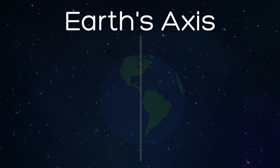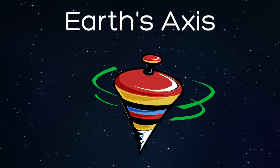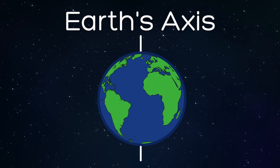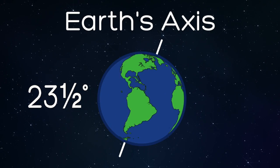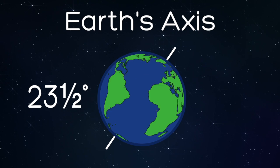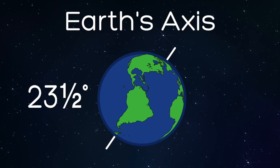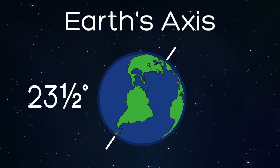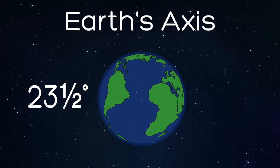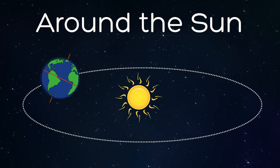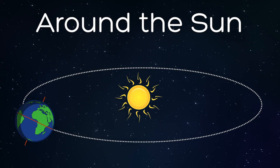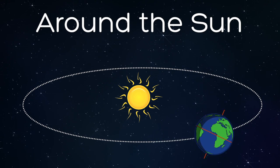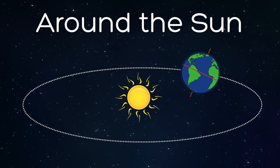Now imagine a top spinning, but it's slightly tilted. As the Earth spins, it's also tilted about 23.5 degrees away from straight up and down. The amount of tilt stays the same throughout the year. As the Earth moves around the Sun, the tilt of the Earth's axis changes sun angle, or how high the Sun will appear to be in the sky.